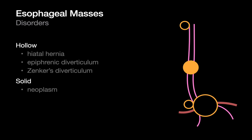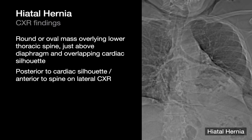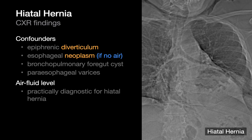For esophageal masses, we divide them into three hollow masses and one group of solid masses. Larger hiatal hernias can present on chest x-ray as a mass overlying the thoracic spine and cardiac silhouette just above the diaphragm, and as a mass between the cardiac silhouette and lower thoracic spine on a lateral chest x-ray. A number of disorders can mimic this appearance — large epiphrenic esophageal diverticulum, large esophageal neoplasm, bronchopulmonary foregut cysts, or large esophageal varices. However, if you can see an air-fluid level within this mass, that's practically diagnostic for a hiatal hernia and unlikely to be seen in the confounders.